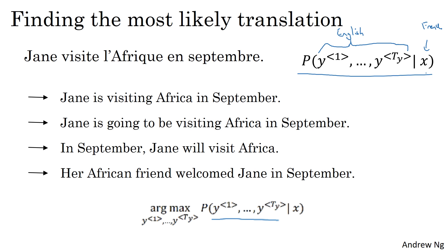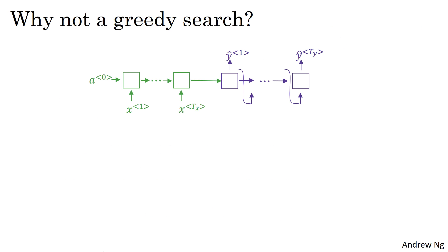what you would like is to find an English sentence Y that maximizes that conditional probability. So in developing a machine translation system, one of the things you need to do is come up with an algorithm that can actually find the value of Y that maximizes this term over here. The most common algorithm for doing this called beam search is something you'll see in the next video. But before moving on to describe beam search, you might wonder why not just use greedy search.